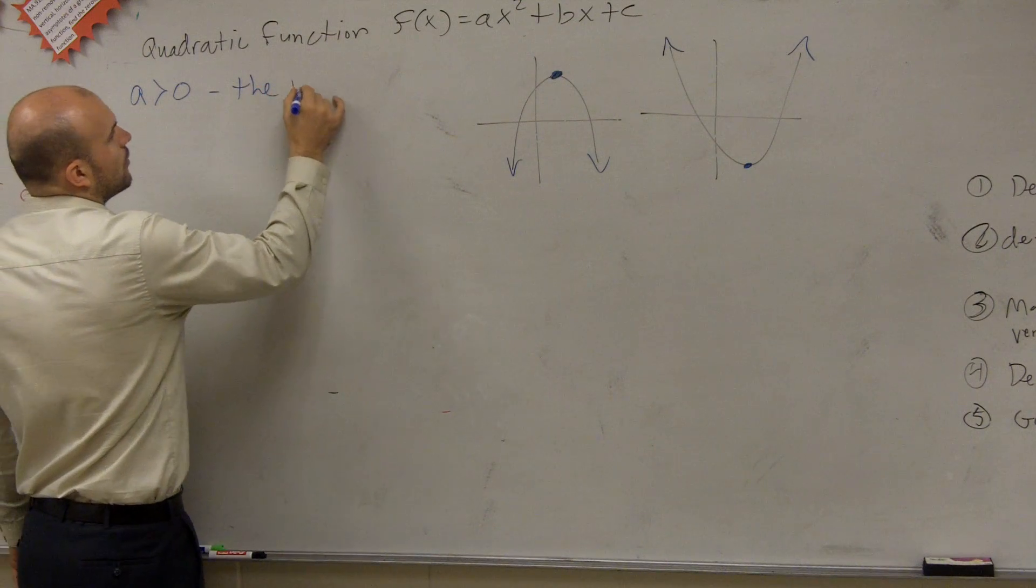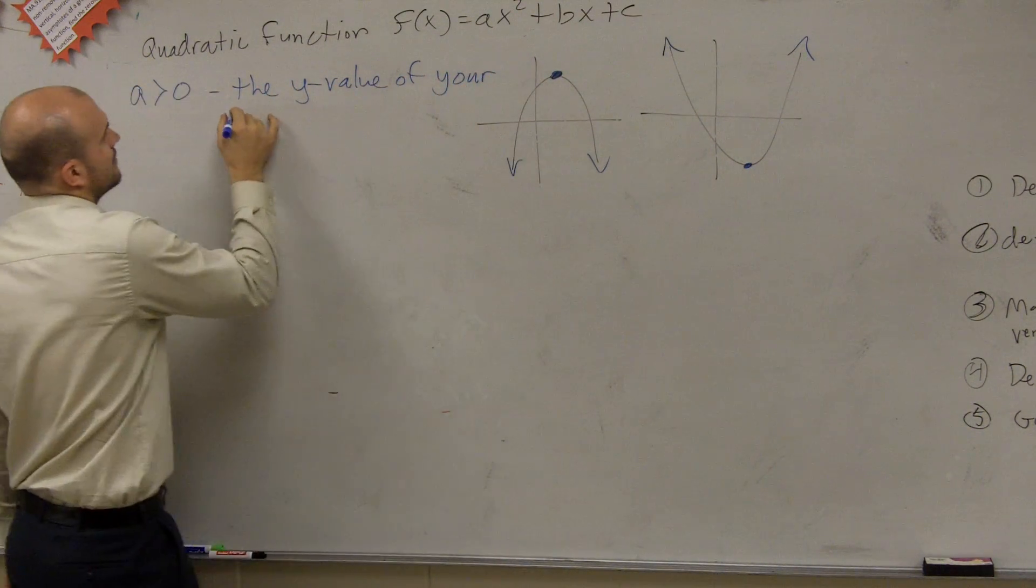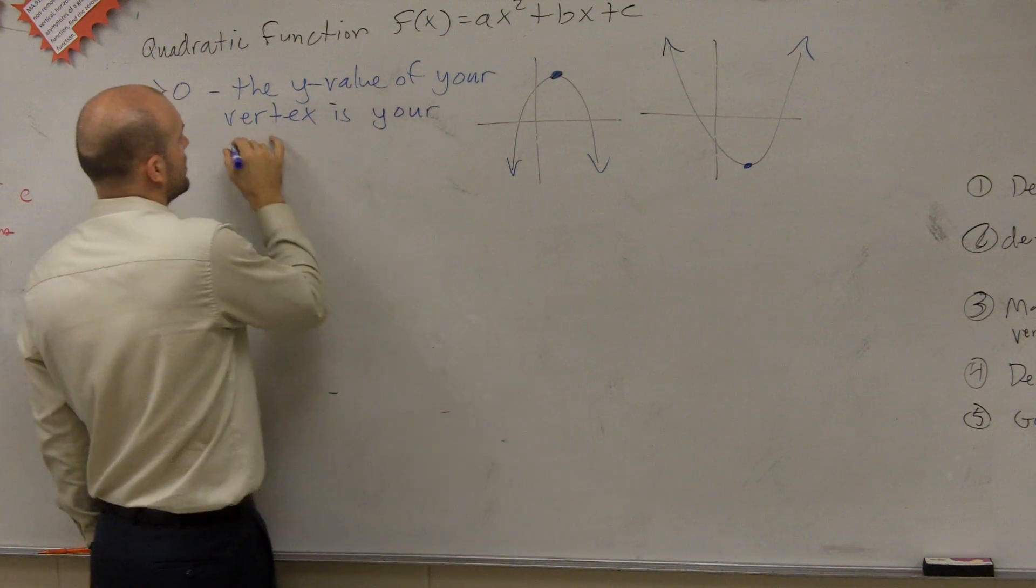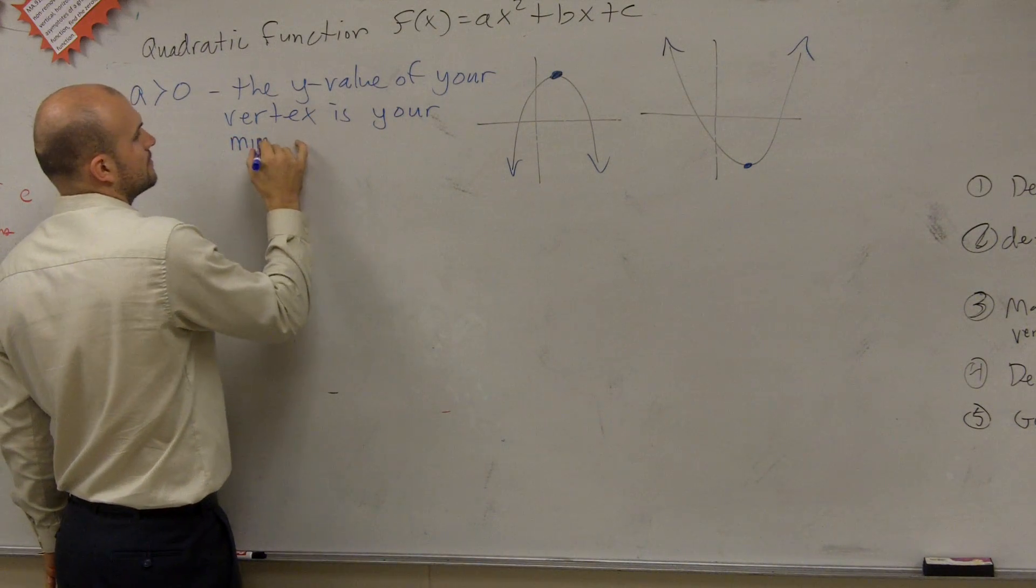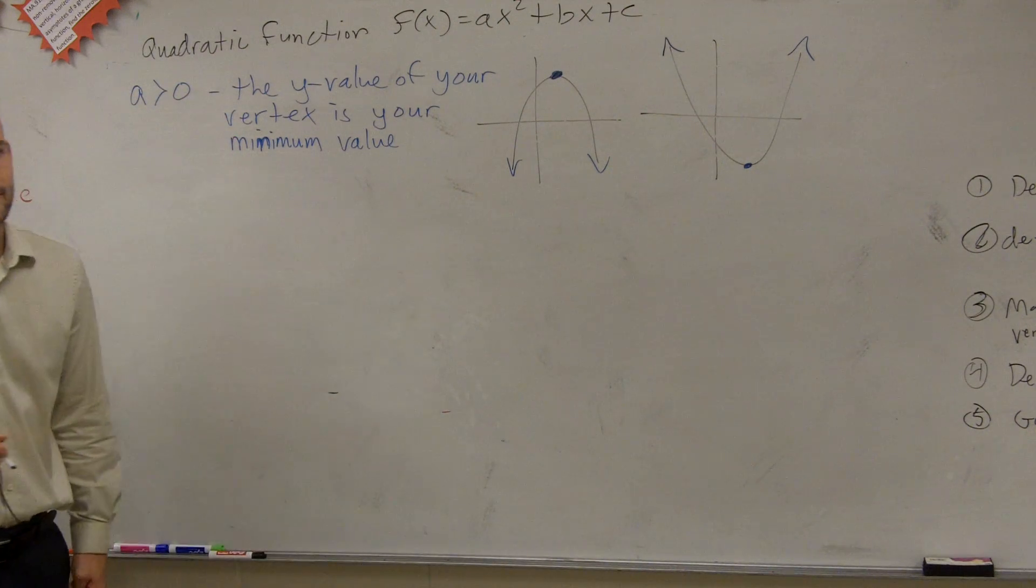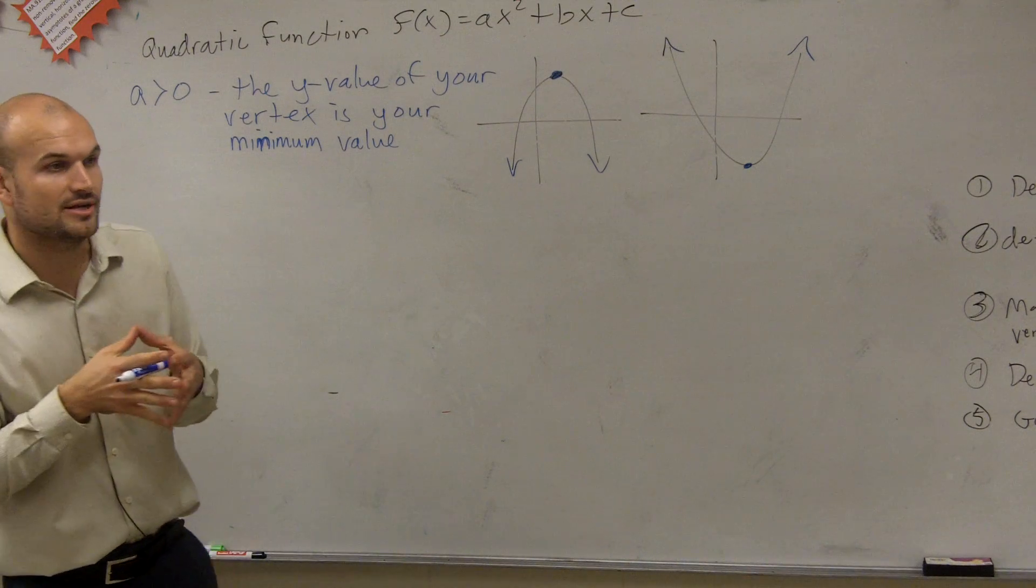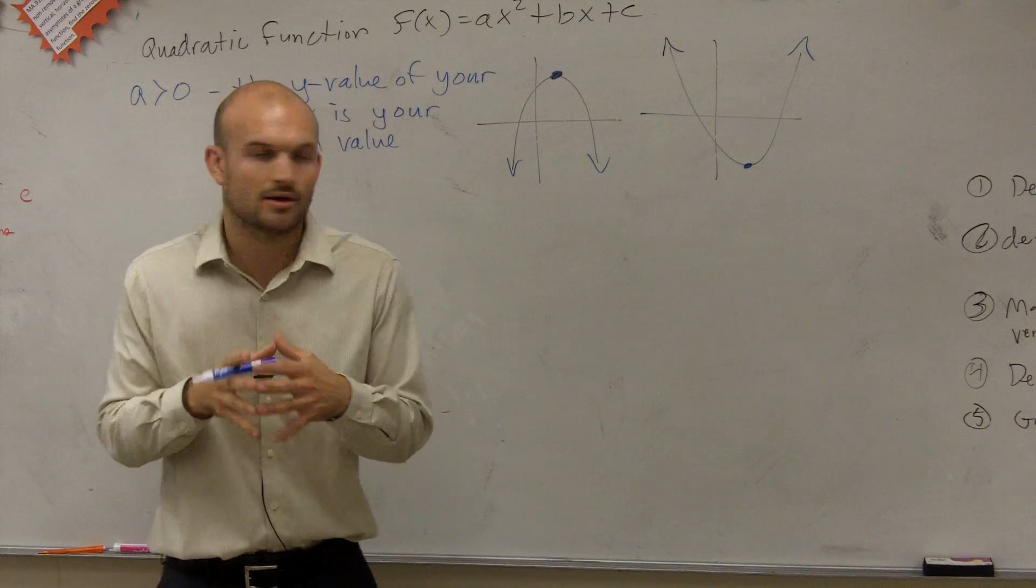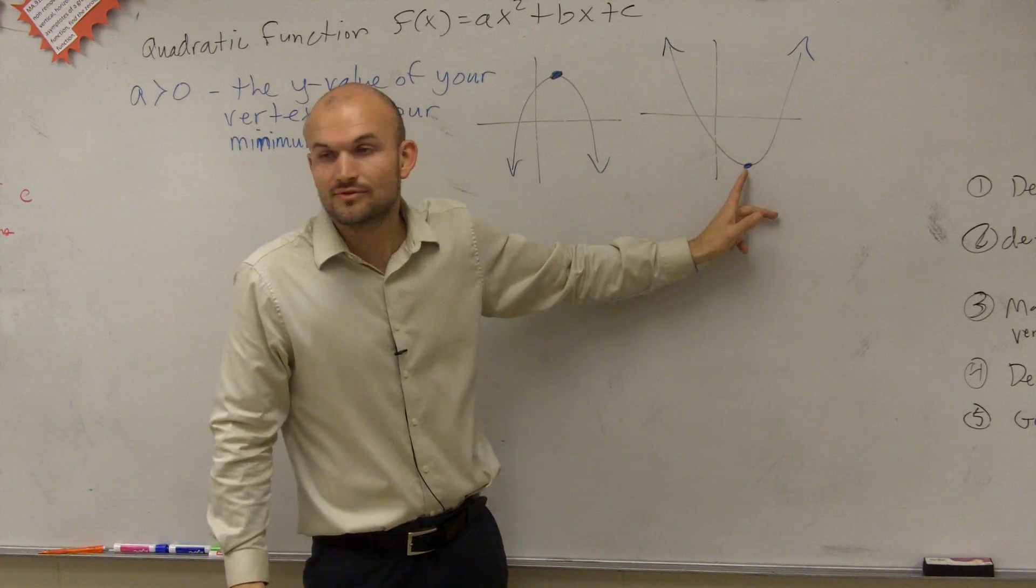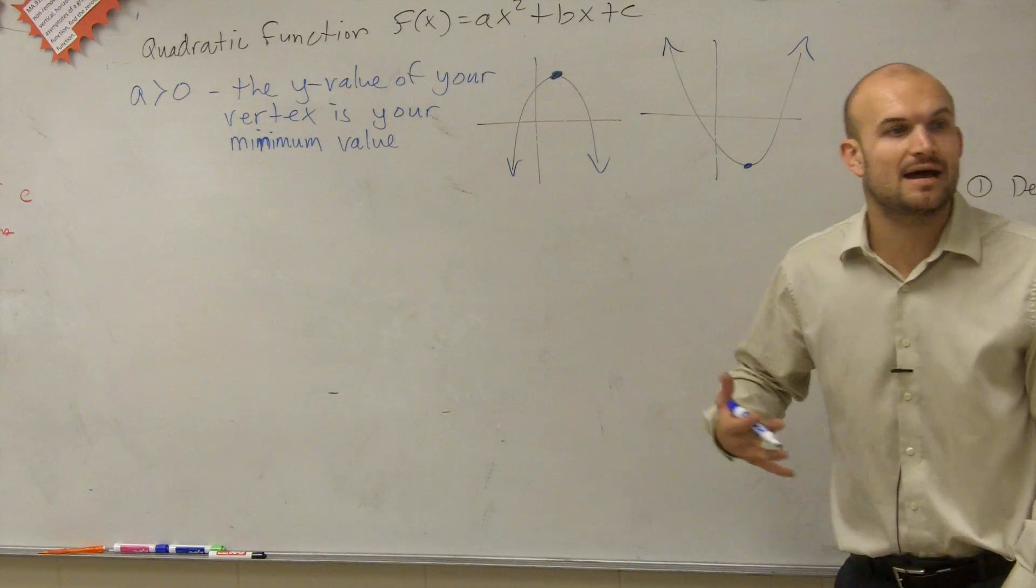the y value of your vertex is your minimum value. The y value of vertex is going to be the minimum y value of your vertex. Because if you look at this, if a is greater than 0, that means my graph is going to open upwards. And then so this point right here, my vertex, the vertex is going to be the minimum point on my parabola.